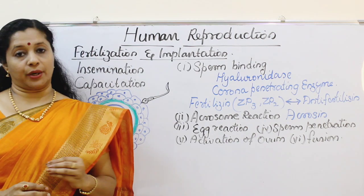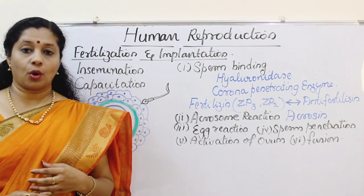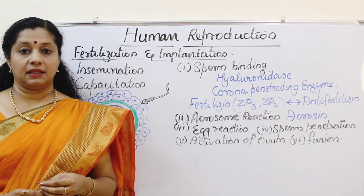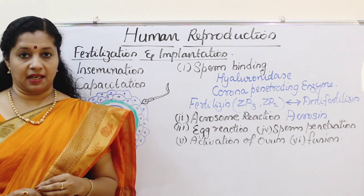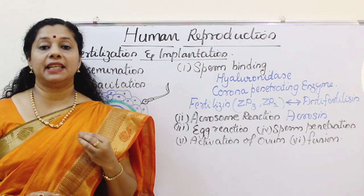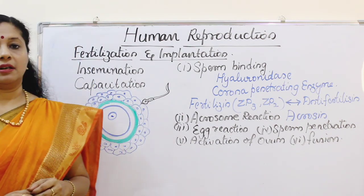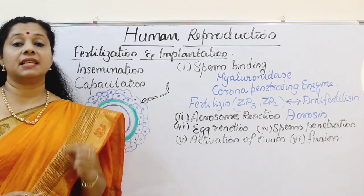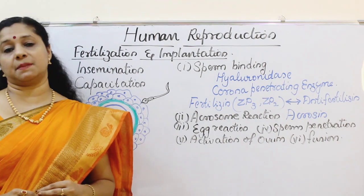During coitus, intercourse, or copulation, the male ejaculates his sperm or semen into the vagina of the female. That process of transfer of semen or sperm into the vagina is called insemination. A large number of sperms are released during ejaculation — around 300 to 400 million sperms.